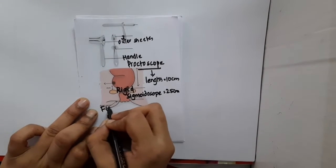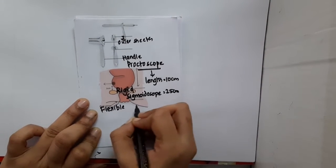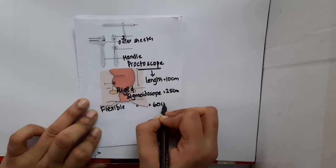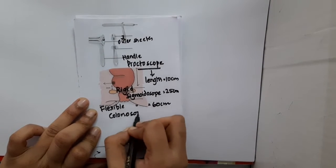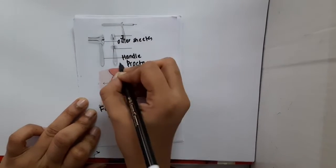Then what is the length of the flexible sigmoidoscope? Flexible sigmoidoscope length is 60 centimeters. What is the length of the colonoscope? Colonoscope length is 160 centimeters.